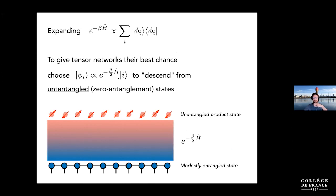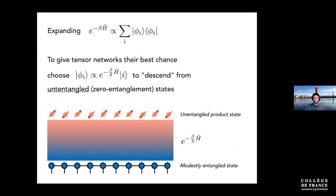The key insight is: what's the smartest choice for the seed states I? Intuitively, start with the least entangled thing — an unentangled product state. These make a complete basis of the whole Hilbert space, and the hope is that giving tensor networks a head start with zero entanglement, the entanglement will remain manageable as we thermalize. We should start with zero entanglement, grow to modest entanglement, and end up at most with the ground state value, which has been proven to be something tensor networks can handle.